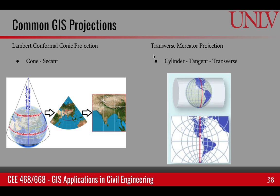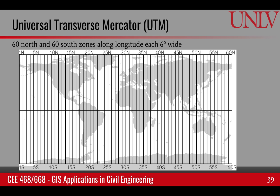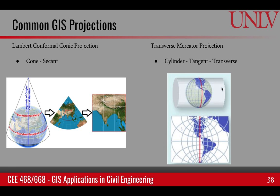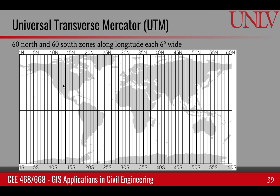The transverse Mercator projection — and the version you're probably most familiar with is the UTM, or Universal Transverse Mercator — uses a cylinder in a transverse orientation. In UTM, this idea is extended to various parts of the world: along the longitudes, there are 60 north and 60 south zones, and each zone is six degrees wide.